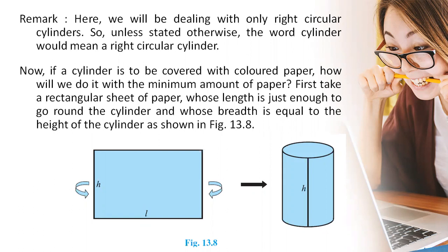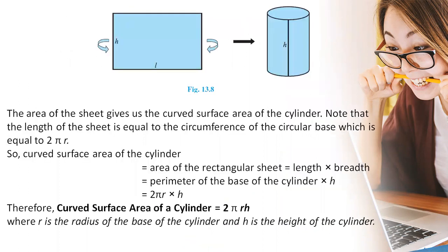Now if a cylinder is to be covered with colored paper, how will we do it with the minimum amount of paper? First we need to take a rectangular sheet of paper whose length is just enough to go around the cylinder and whose breadth is equal to the height of the cylinder, like shown in this particular figure. So here the area of the sheet gives us the curved surface area of the cylinder. We need to note that the length of the sheet is equal to the circumference of the circular base, which is equal to 2πr, that is πd.